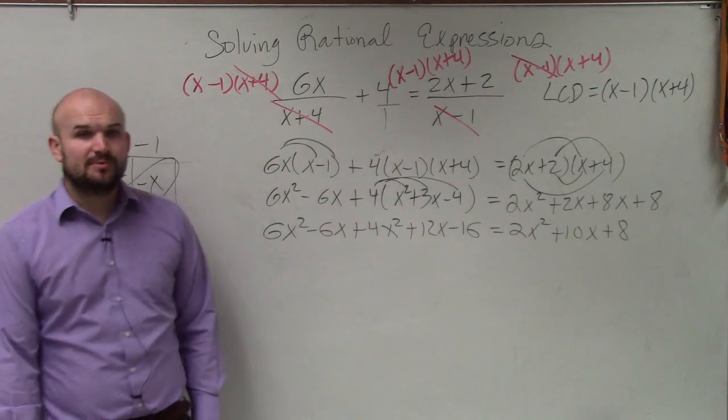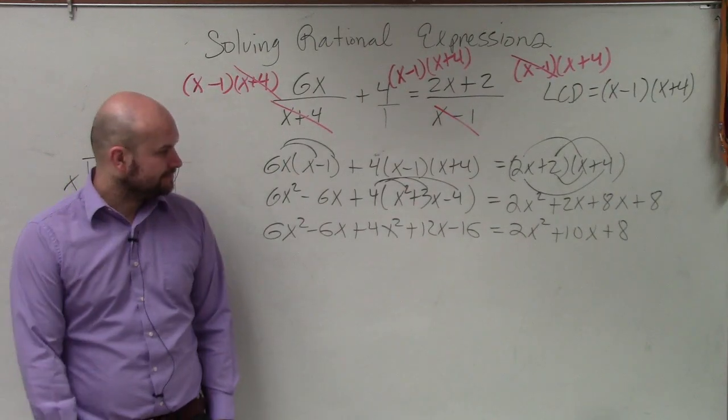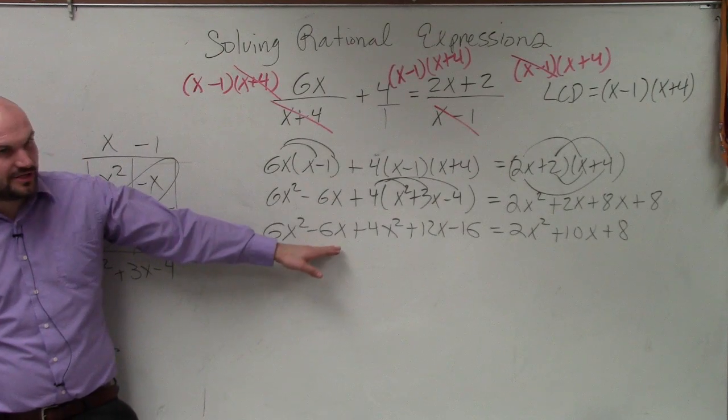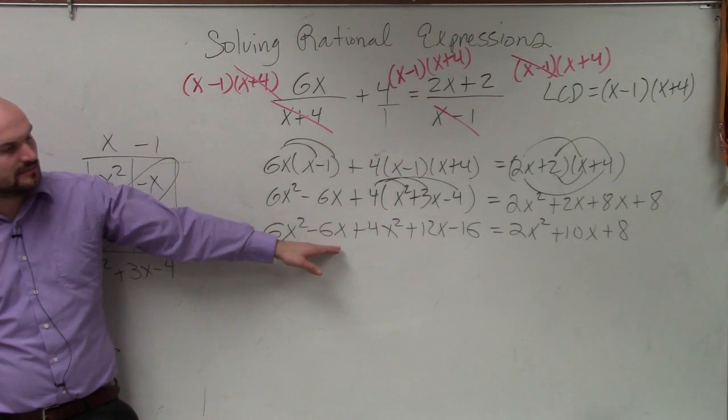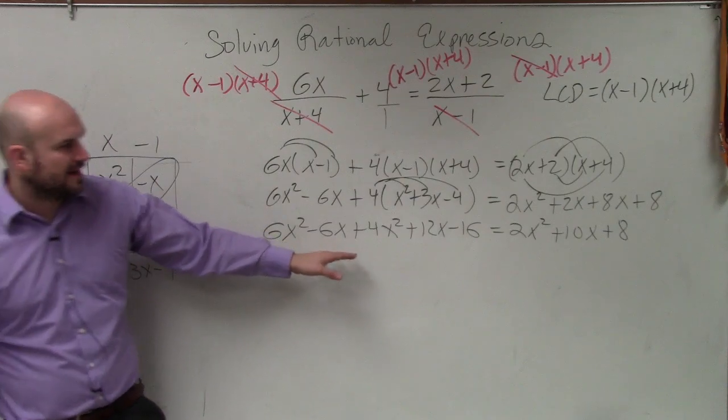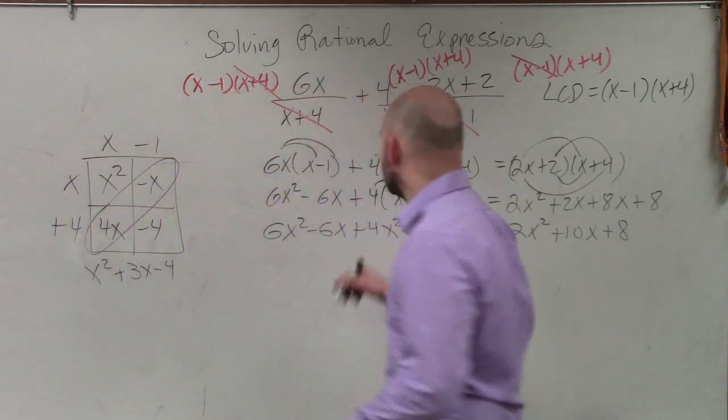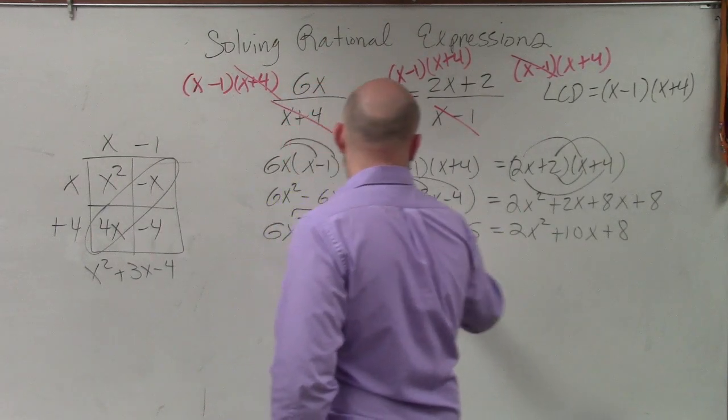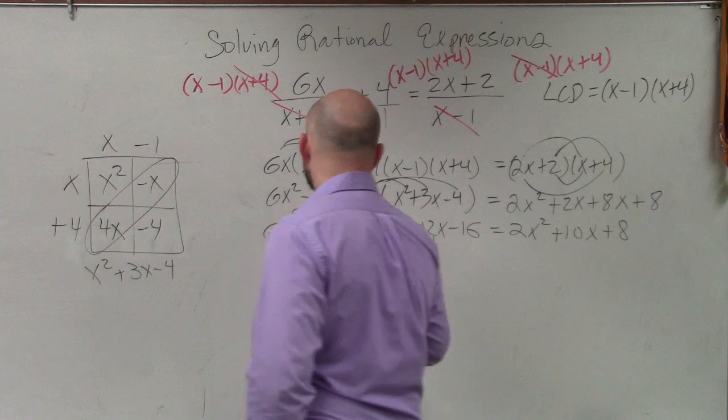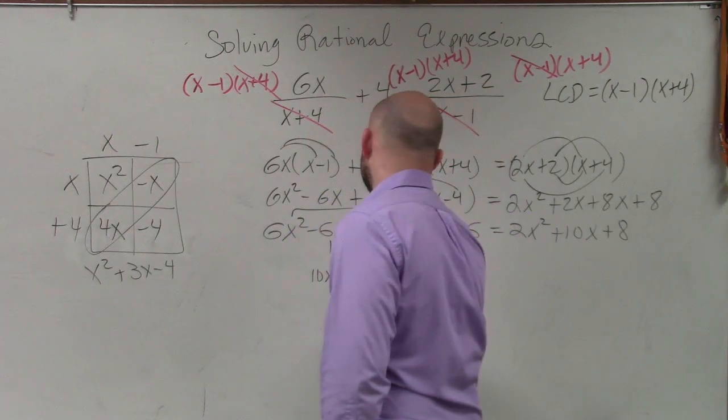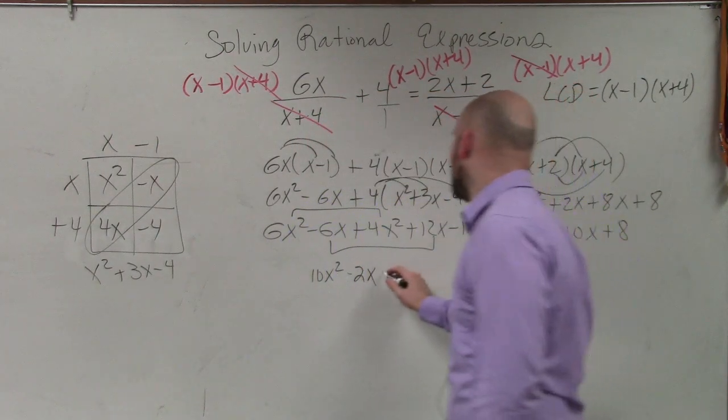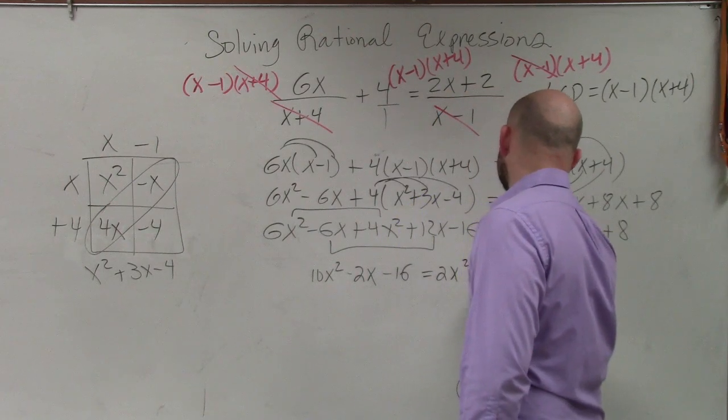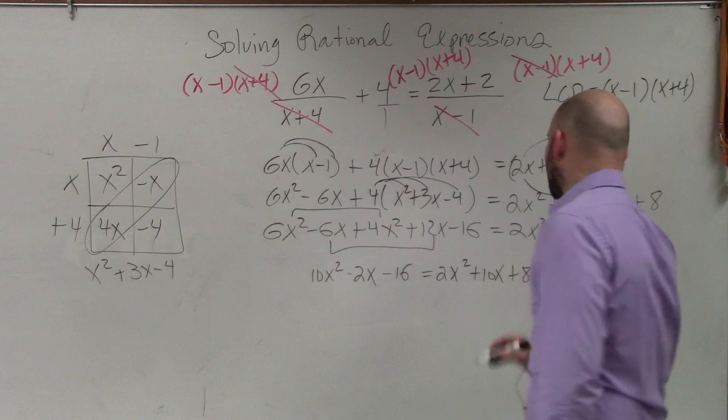So I have 6x squared minus 6x plus 4x squared plus 12x minus 16 equals here, I can combine these 2x squared plus 10x plus 8. It's just multiplying and adding and subtracting. So now, what we can simply do is combine our like terms. 6x plus 4x squared is going to give us 10x squared.